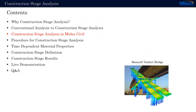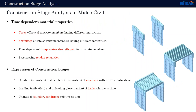Now let's see how we tackle construction stage analysis in MIDAS Civil. There are two main parts to be considered. Firstly, time-dependent material properties — these are accounted for by defining creep and shrinkage properties, compressive strength gain, and tendon relaxation. The second part is the definition of the stages and actual sequences using members, loads, and boundary conditions.